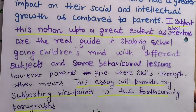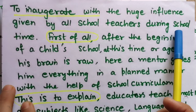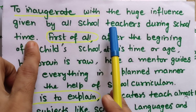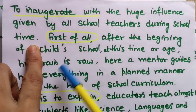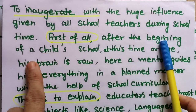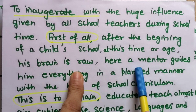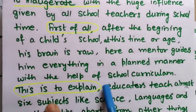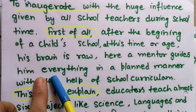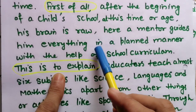Now coming to body paragraph one. I started with: 'To inaugurate with the huge influence given by all school teachers during school time' — no comma, as the sentence continues. First and foremost, after the beginning of a child's school life, his brain is raw. Here a mentor guides him everything in a planned manner with the help of the school curriculum. This is the reality — when a child starts school, the mentor guides everything systematically.